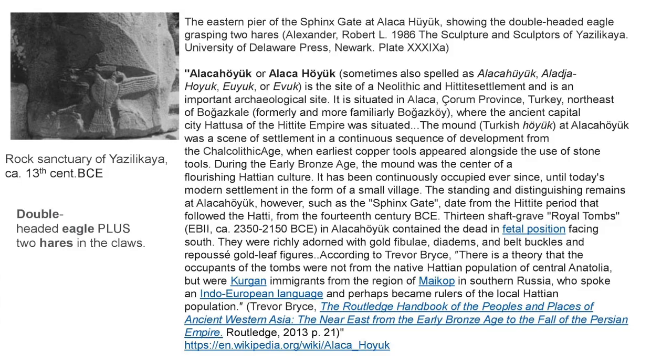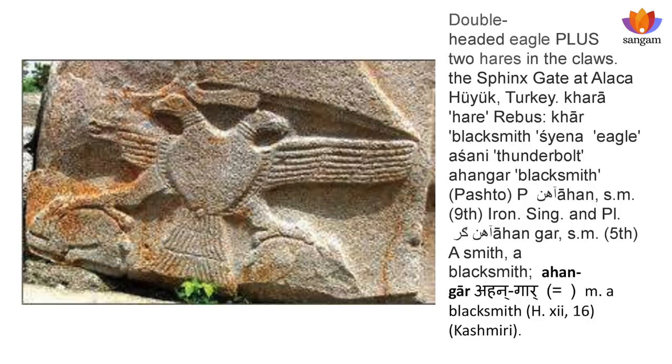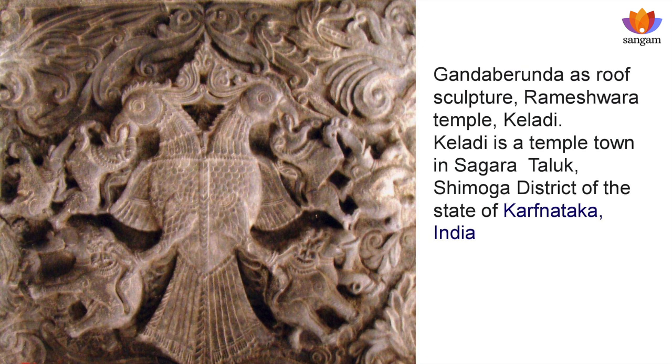I suggest a hypothesis that these people were Meluha merchants who were travelling all over Europe and Russia spreading their metallurgical competence. Look at the rock country of Aziyasi-Likya of approximately 13th century BCE, which shows the double-headed eagle and two hares in the claws of this eagle. They are Indus script hieroglyphs: khara means hare, khar means blacksmith; siena means eagle; asani means thunderbolt; ahangar means blacksmith; ahan means iron. The Siena is also a roof sculpture in Rameshwara temple in Keladi, Shimoga district of Karnataka — close to Sahyadri Ranges. The eagles are so powerful they represent enormous force — lifting an elephant and another animal and flying away.